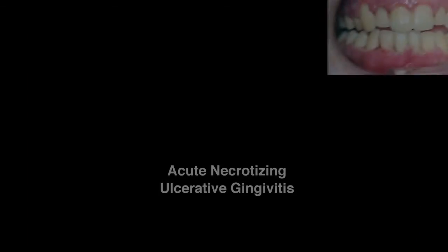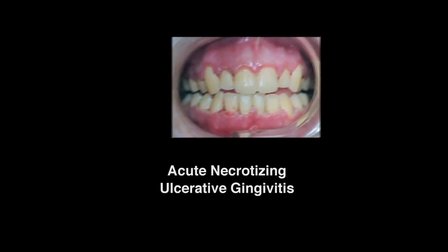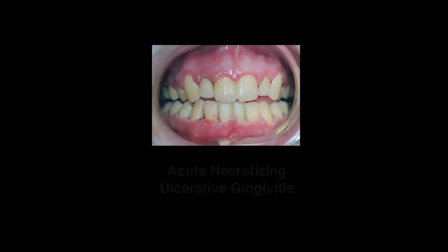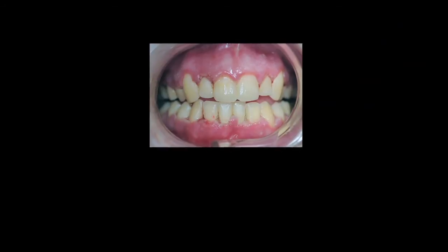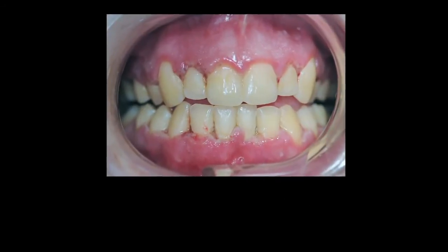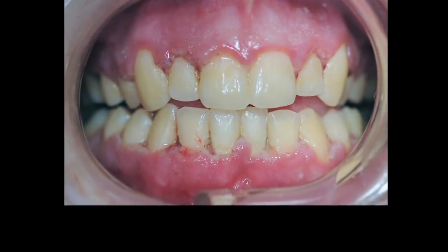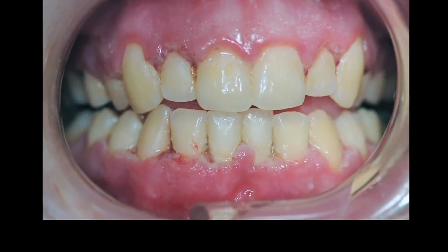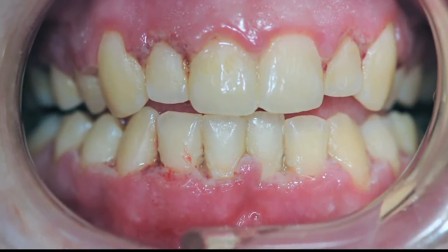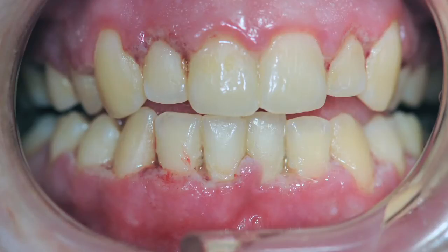When evaluating the gingiva, there are many lesions you may find, including acute necrotizing ulcerative gingivitis, which used to be known as trench mouth. Other conditions seen on the gingiva include desquamative gingivitis, or peeling of the gingiva, and secondary herpetic lesions, which occur on the attached mucosa and the palate.